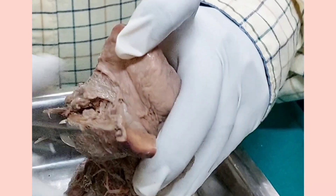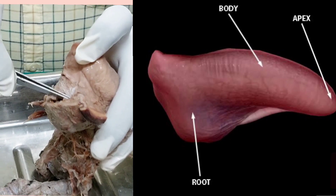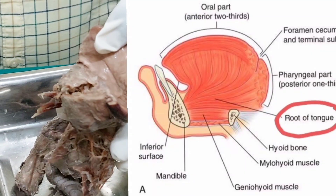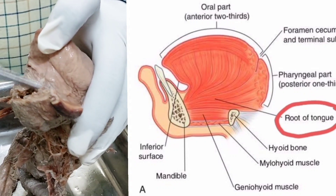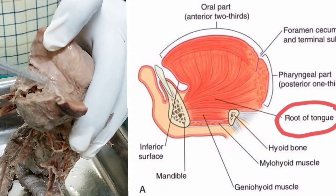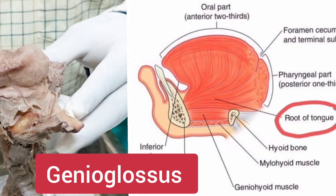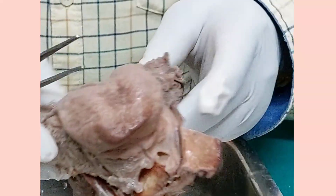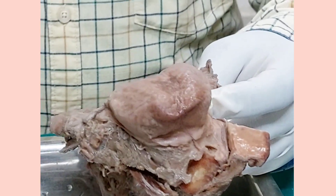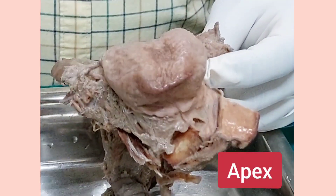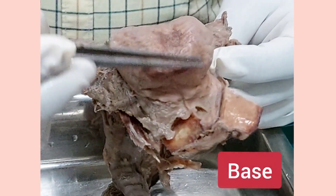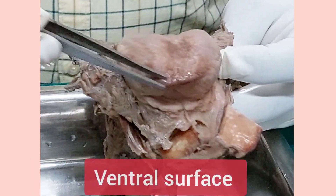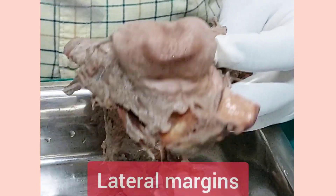Another part of the tongue is the root of the tongue, by which it is attached to the mandible. The muscle which forms the root of the tongue is the genioglossus muscle. So altogether the parts are: apex, base, dorsal surface, ventral surface, two lateral margins, and one root.